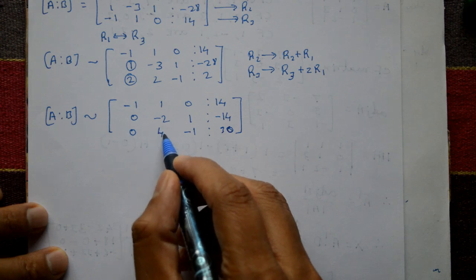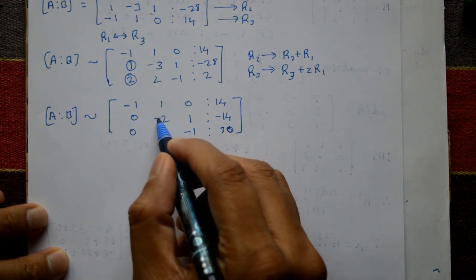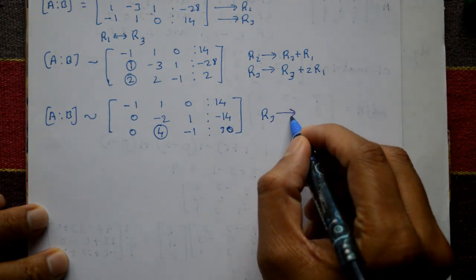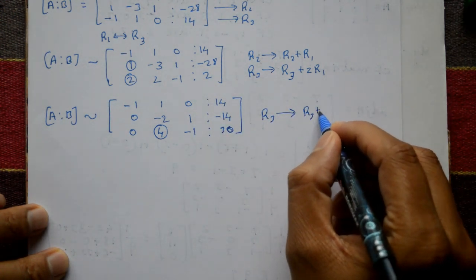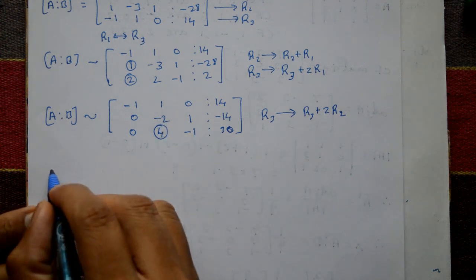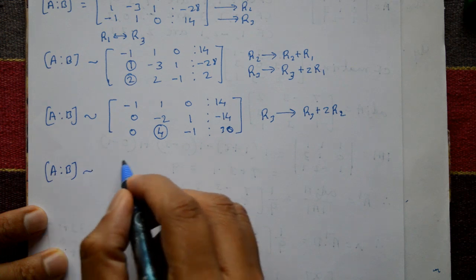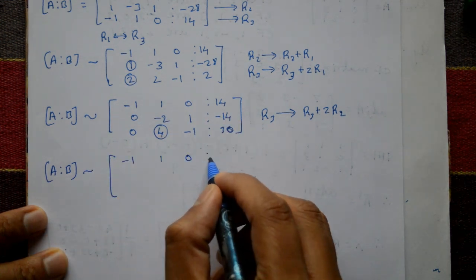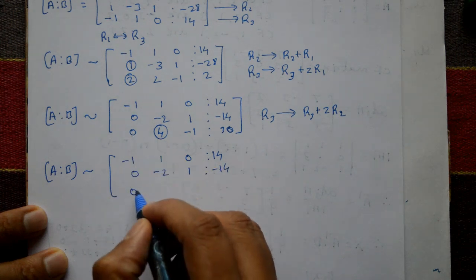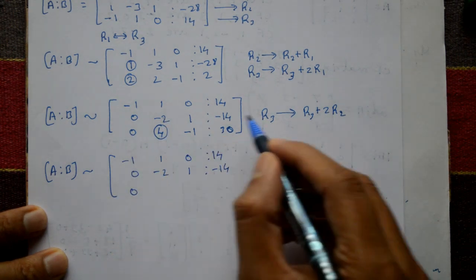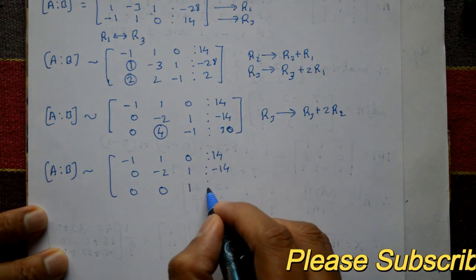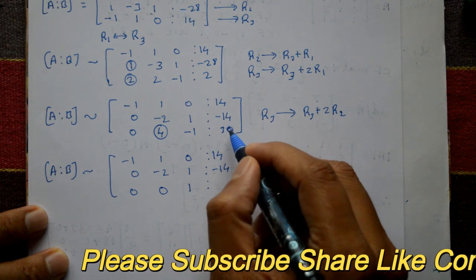The leading number of the second row is now minus 2, and the element below it is 4 — we need to make it 0. So R3 equals R3 plus 2 times R2. Do not use R1 again, to maintain the zeros already achieved. After this operation: 0 plus 0 is 0; 4 plus 2 times minus 2 gives 0; minus 1 plus 2 times 1 gives 1; and 30 plus 2 times minus 14 gives 2.